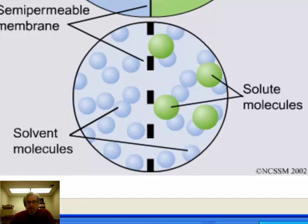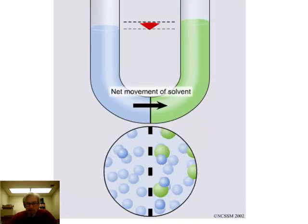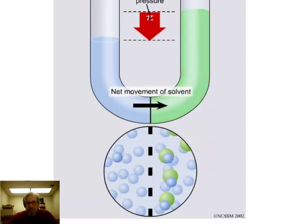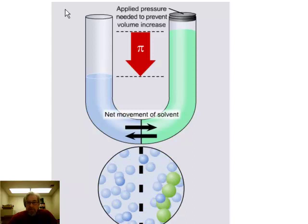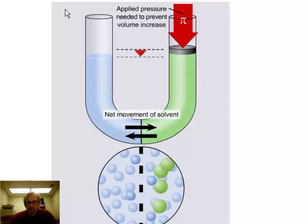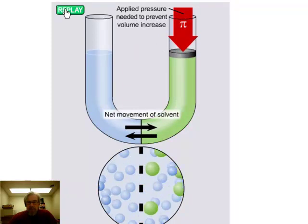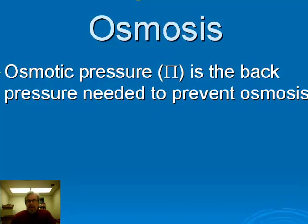Watch what happens when the simulation starts. Through random motion, solvent particles are moving through the semi-permeable membrane both ways, but more solvent particles are moving into the solution side than into the pure solvent side. Over time, there's a great difference in volume on the two sides. In order to push it backwards — to move all those solvent particles back — we would have to apply a pressure. That amount of applied pressure needed to re-equalize the volumes is called the osmotic pressure.